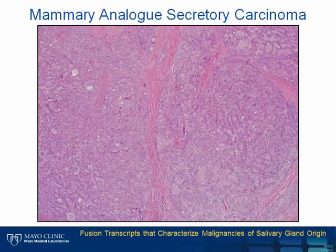Mammary analog secretory carcinoma of salivary glands is a recently described entity that shows morphologic, immunophenotypic, and molecular overlap with secretory carcinoma of the breast. Prior to its characterization by Skalova et al. in 2010, these cases were commonly misclassified as acinic cell carcinoma, cystadenocarcinoma, and adenocarcinoma not otherwise specified. Skalova et al. described it as a relatively low-grade salivary gland malignancy that predominantly involves major salivary glands, primarily the parotid gland.